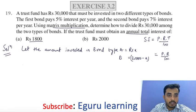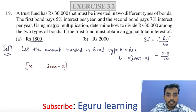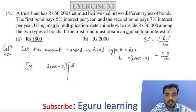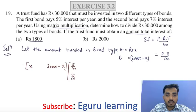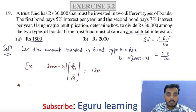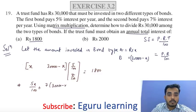So we have a row matrix [X, 30,000 − X]. On the first bond we are getting an interest of 5%, so this is 5/100. On the second bond we are getting interest of 7%, so this is 7/100. The total interest we are getting is Rs. 1800. On matrix multiplication we get: 5X/100 + 7(30,000 − X)/100 = 1800.